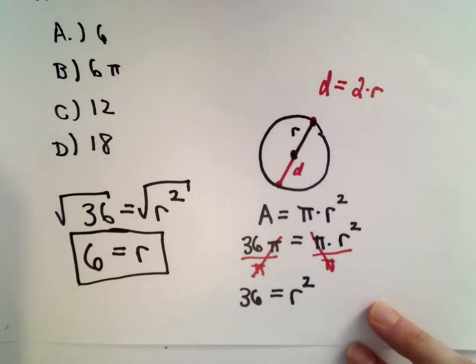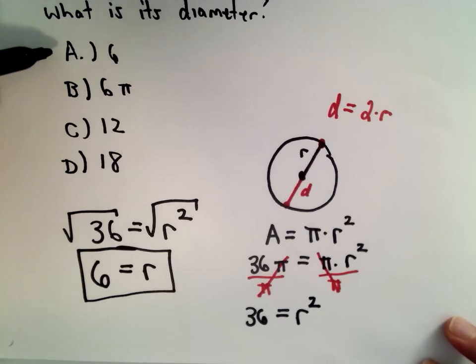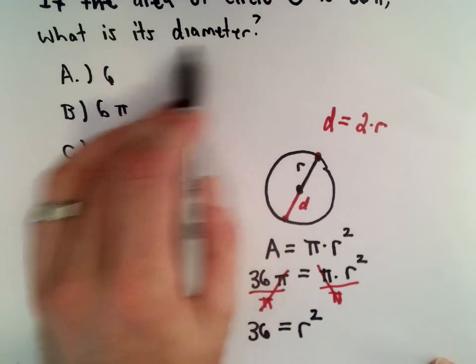So we know that the radius of our circle is 6. Be careful because 6 is one of the answer choices, but they don't ask us what's the radius—they say what's the diameter?